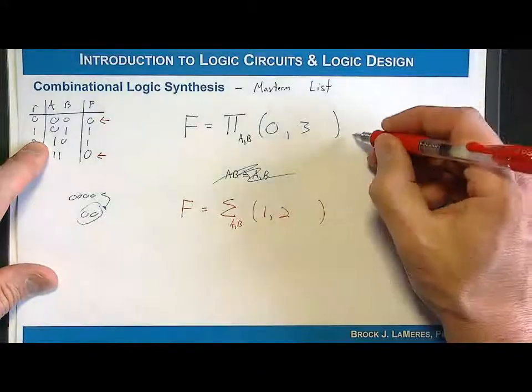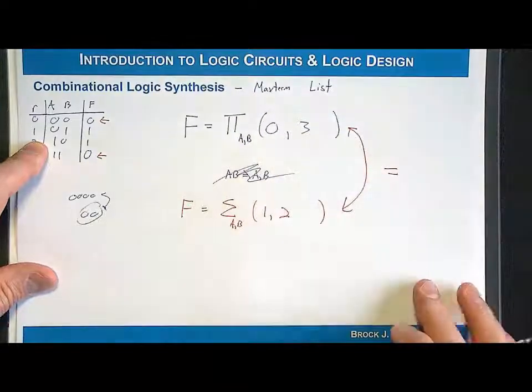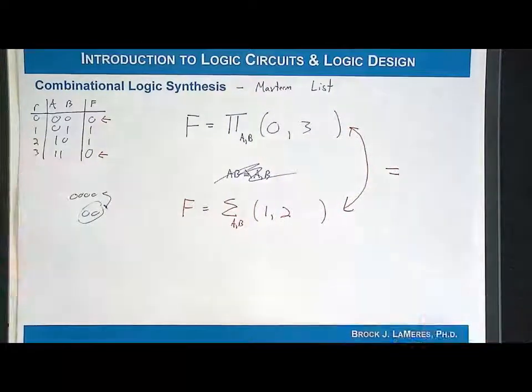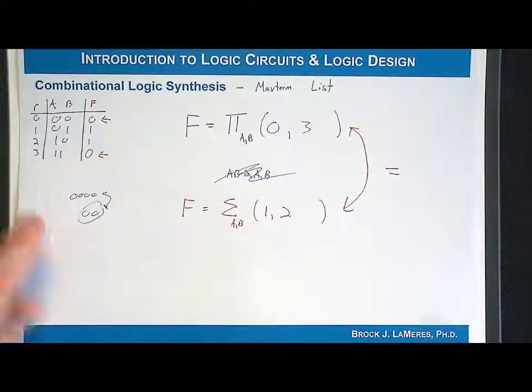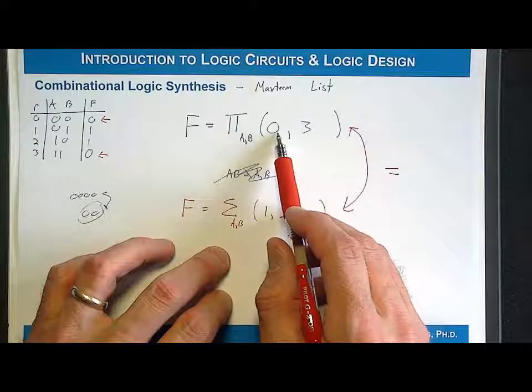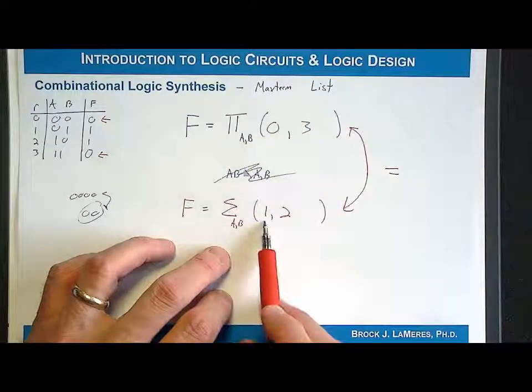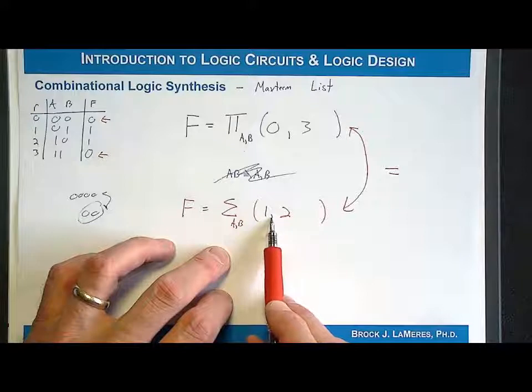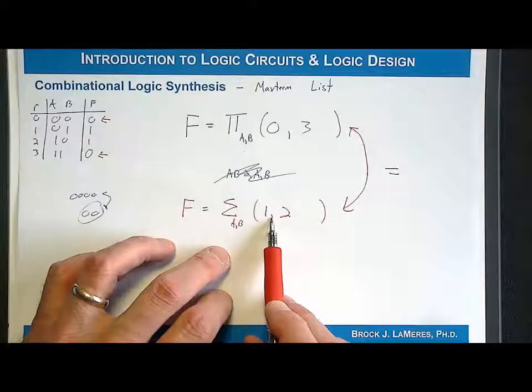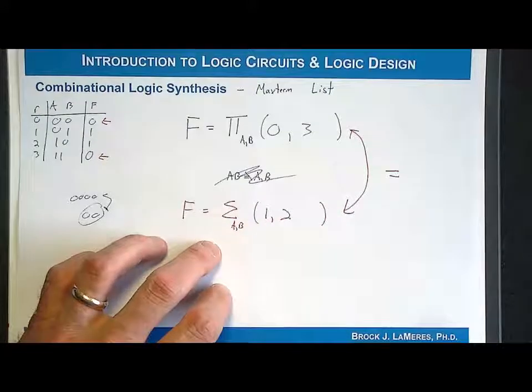So notice that this is equal to this. This is the exact same way to represent the information in a truth table. It's just that one lists the rows for when the outputs are 0, row numbers for when the outputs are 0. That's the max-term list. And the other one, the min-term list, lists the row numbers for outputs in the truth table corresponding to a 1. So they're equivalent in form to each other.